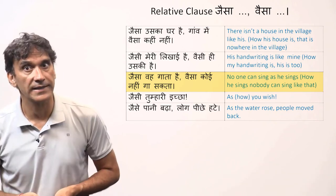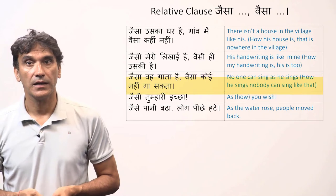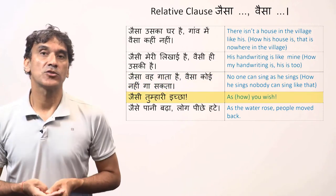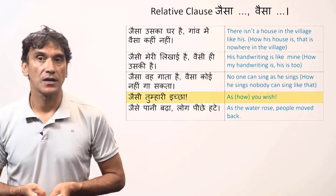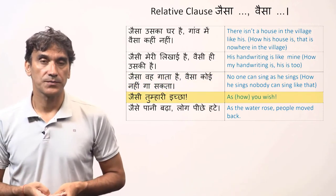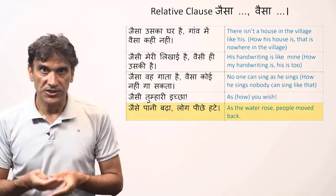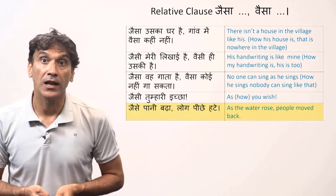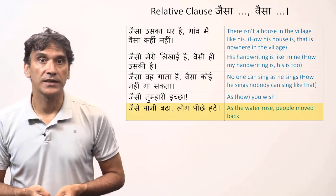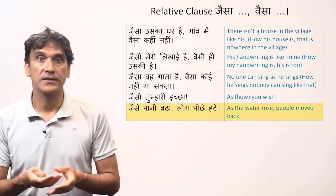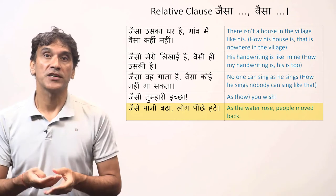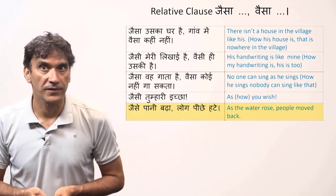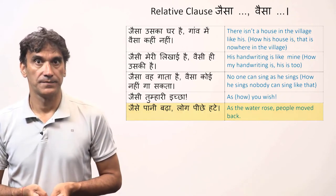'Jaisi tumhari ichha' — as you wish, literally 'how you wish.' 'Jaisi pani badha, log piche hate' — as the water rose, people moved back. In this last example, jaisi is functioning as an adverb.